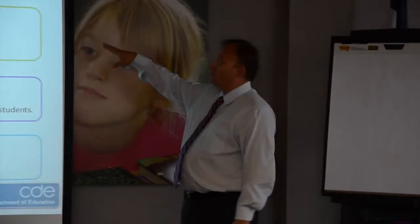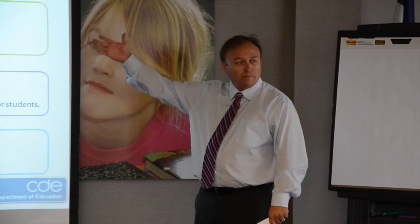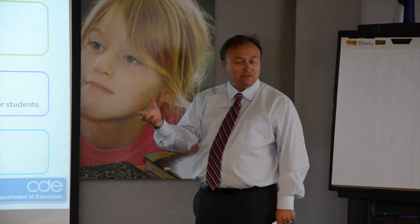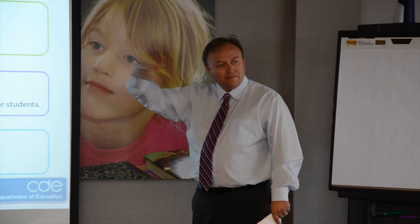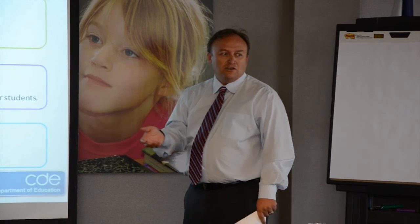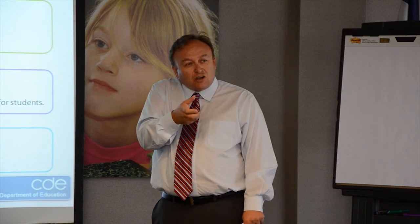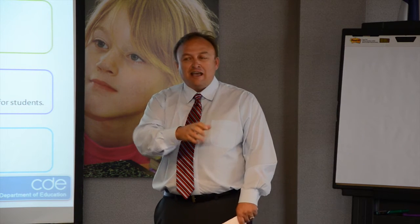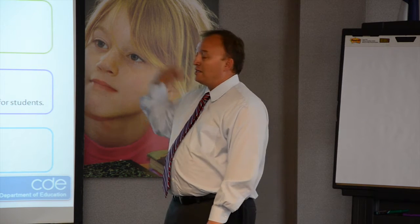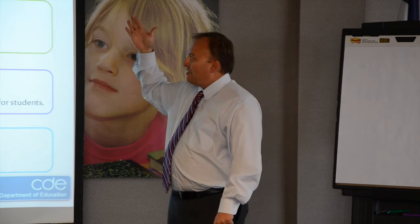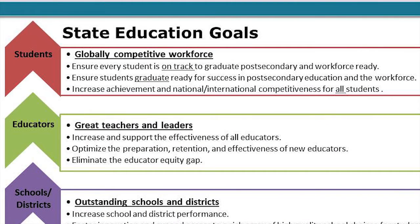Let's take a closer look at the state education goals. We have four major buckets on the left-hand side. We focus on students first — we want our kids, when they leave us, to be successful. When you think about a kindergarten student, you want them to be successful in first grade, but sometimes it's harder to pull yourself out of that window and think about it as a whole. At the department we think about all students in Colorado being on track to graduate so that they can be competitive for whatever opportunities exist for them in the 21st century.